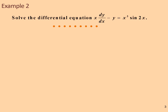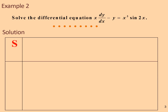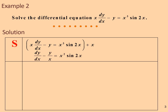Example number 2. Solve the differential equation x dy over dx minus y equal x cubed sine 2x. We must simplify the equation by dividing by x, and we get dy over dx minus y over x equal x squared sine 2x.